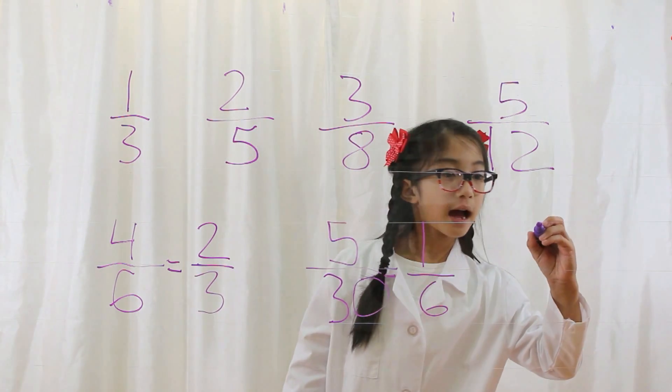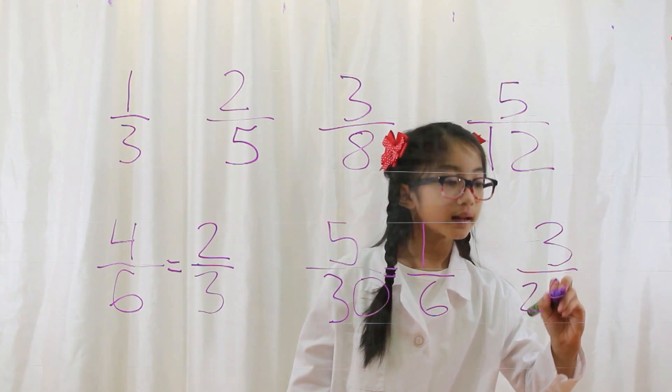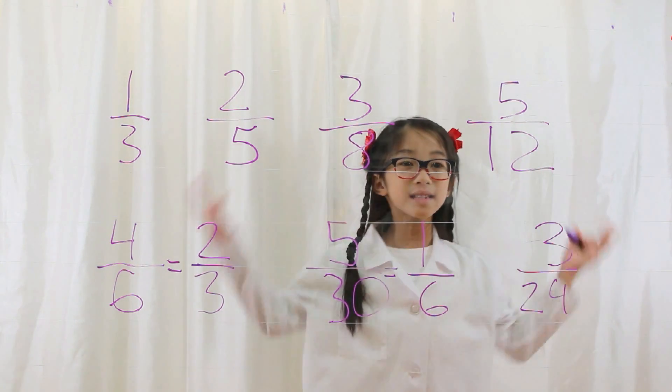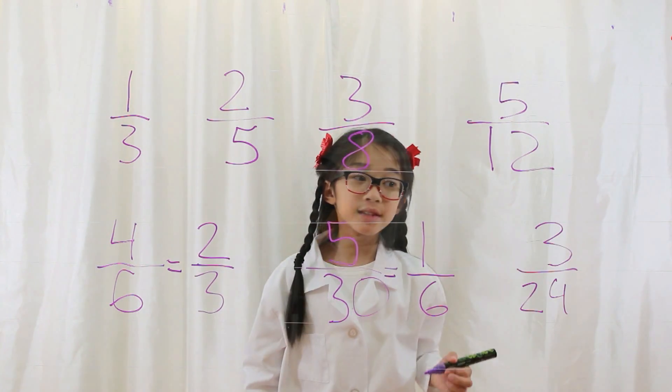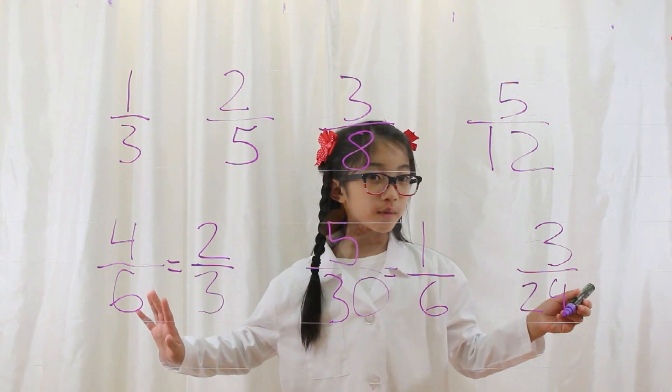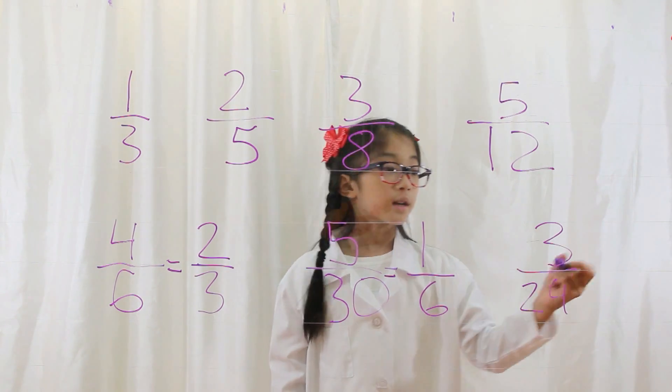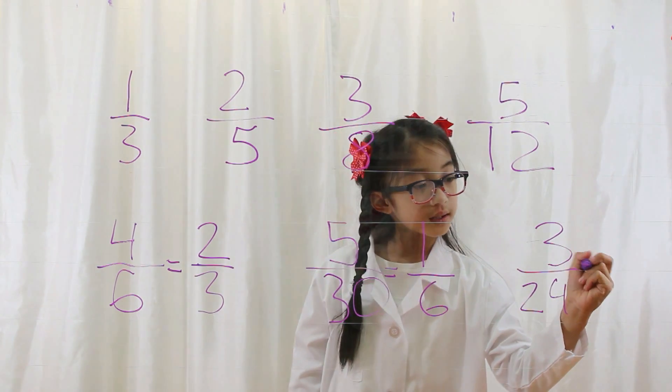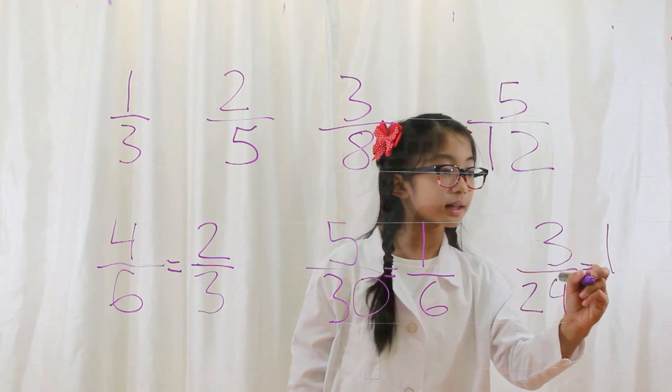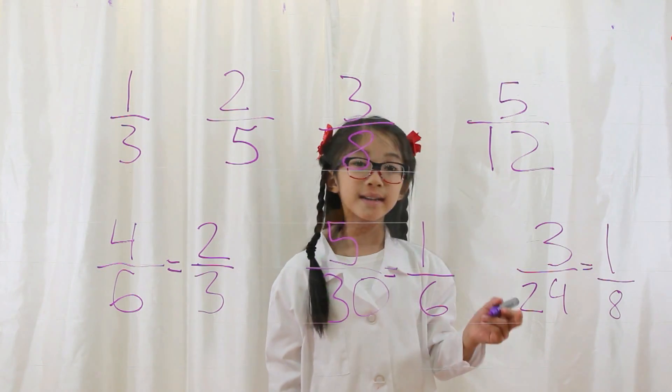Let's say you have three twenty-fourths. Three twenty-fourths equals one-eighth.